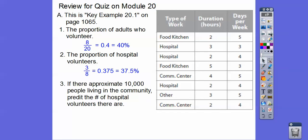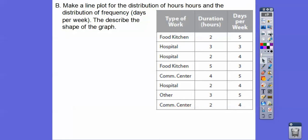So if there are approximately 10,000 people living in the community, predict the number of hospital volunteers there are. Since there's about 40% of the people we're guesstimating that volunteer, and of those, 37.5% do hospital work, we're going to do 10,000 times 0.4 times 0.375, and that'll give us about 1,500 people do hospital volunteering.